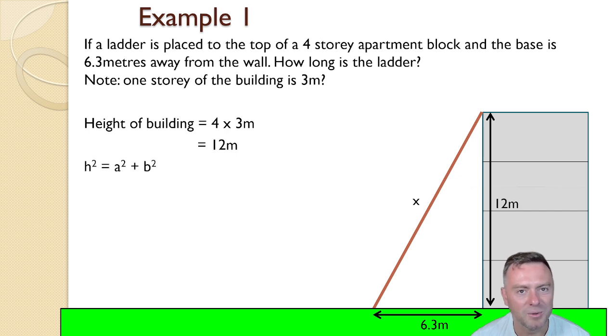We substitute the values in, so the unknown side x squared is equal to 6.3 squared plus 12 squared, because this is the ladder obviously on the hypotenuse there. And then we go x squared is equal to 39.69 plus 144, and we get down to 183.69.